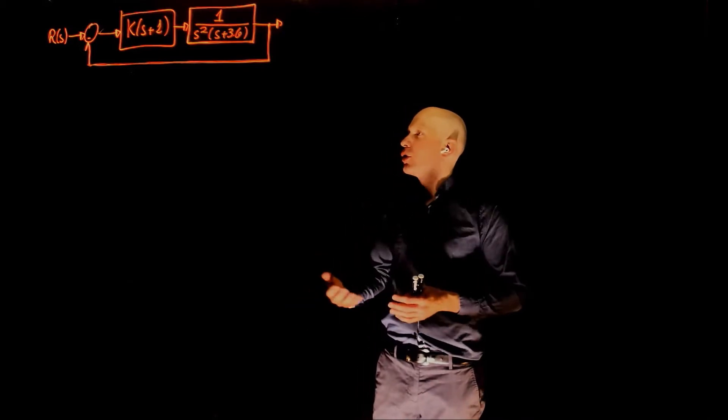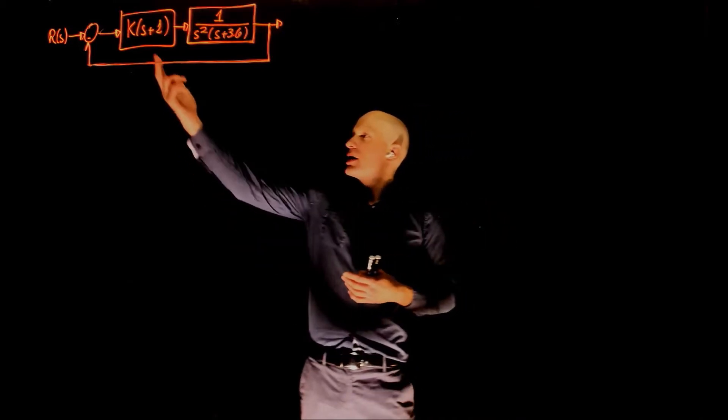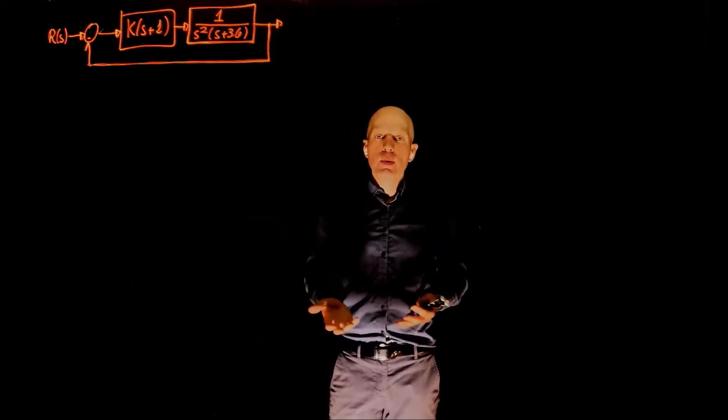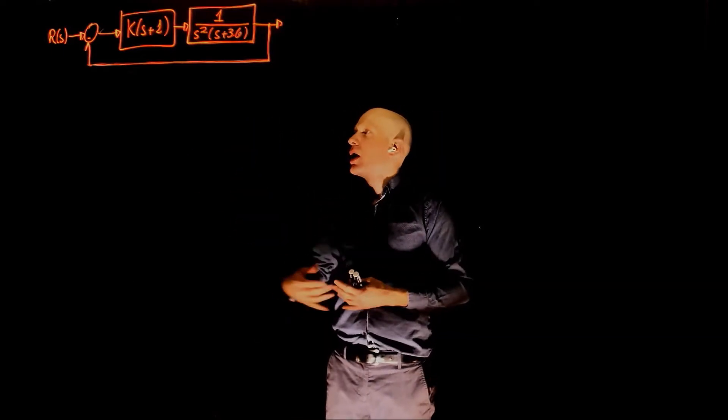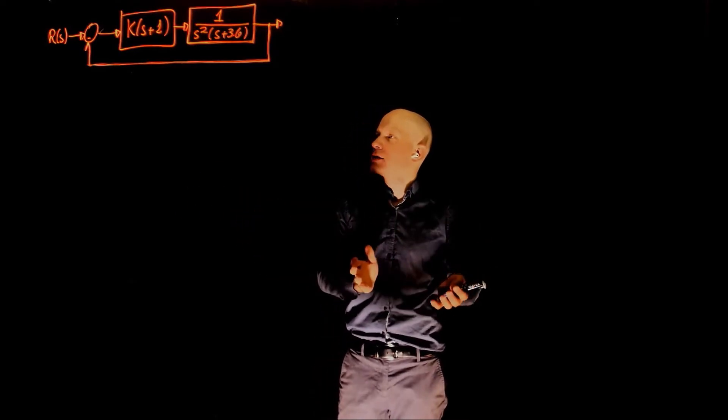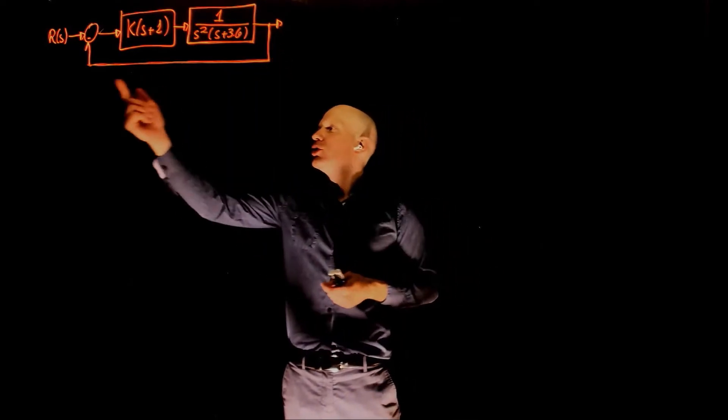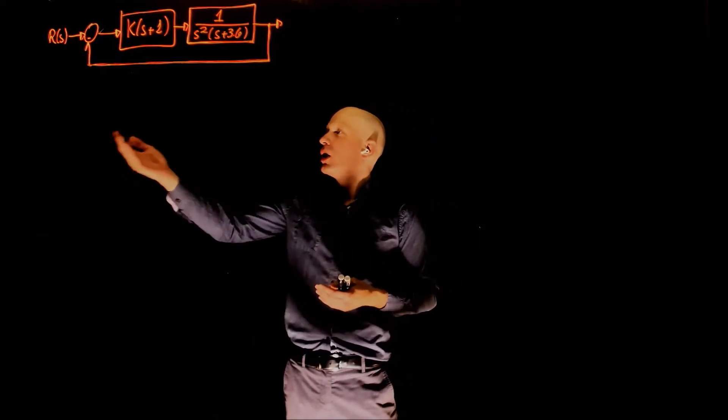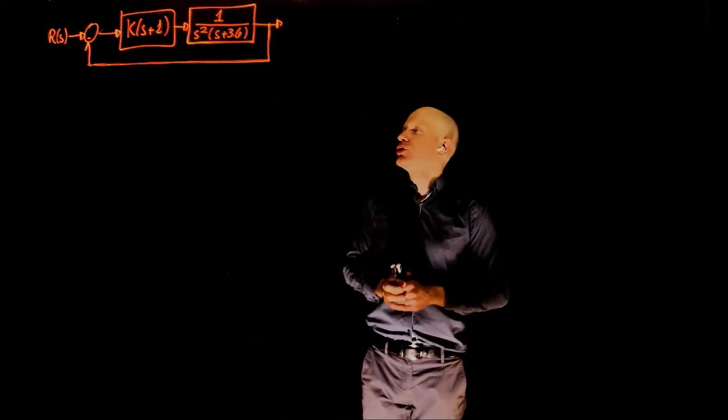The root locus is, of course, the location of all poles as this value of k changes from 0 to infinity. The characteristic equation that we need for root locus is 1 plus k times a function of s, and because this is a unit feedback loop, our characteristic equation will simply be 1 plus the multiplication of these two functions.